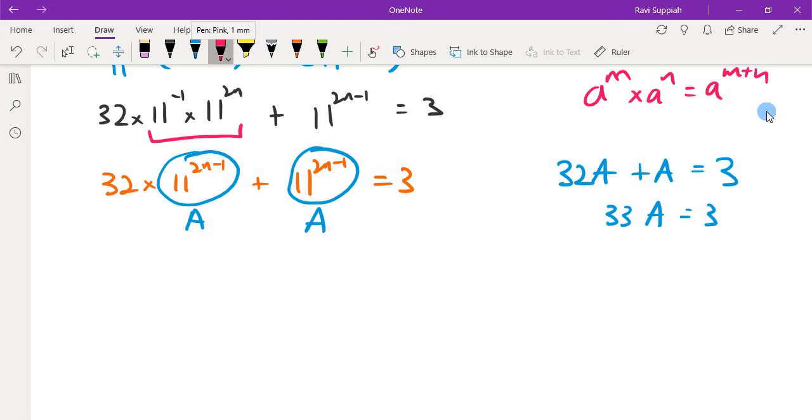This whole expression is now 33 times 11^(2n-1) equals 3. So 11^(2n-1) equals 3 over 33, which is 1 over 11. And 1 over 11, as we saw, is the same as 11^(-1).